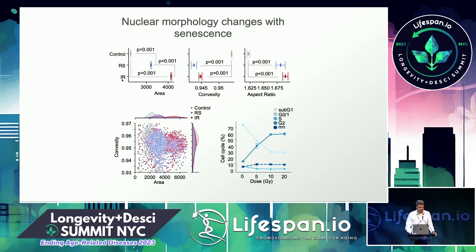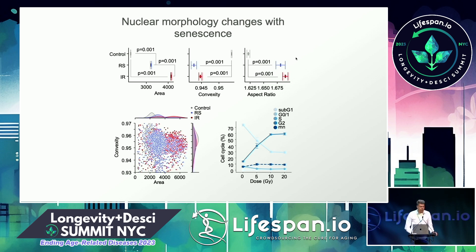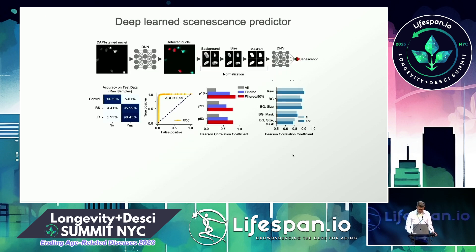We generated data in the lab looking at replicative senescence and ionizing radiation-induced senescence in fibroblasts, and examined different morphological features. We developed a neural network that can extract nuclei and observe how different features change. The nuclei become larger and more convoluted when senescent, and they also become more elongated — something we don't fully understand but see quite consistently. We then trained the neural network to predict senescent cells based solely on nuclear morphology, and this worked very well with very high accuracy.